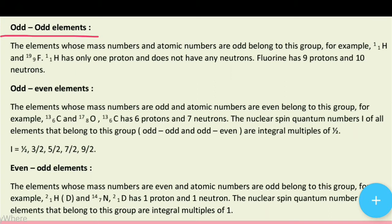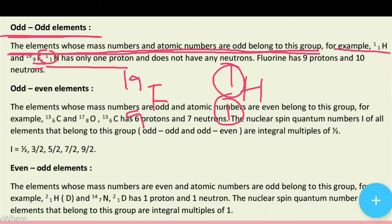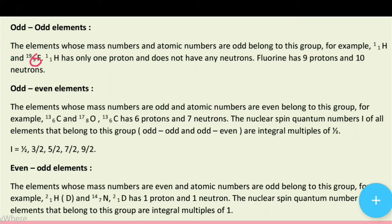Phir uske baad aata hai odd-odd elements. The elements whose mass number and atomic numbers are both odd belong to this group. For example, hydrogen-1 has atomic number 1 and mass number 1 — dono odd hain. Fluorine-19 has atomic number 9 and mass number 19 — dono odd hain. Hydrogen mein only one proton hota hai and no neutrons (1 minus 1 = 0). Fluorine mein 9 protons aur 10 neutrons hote hain (19 minus 9 = 10).